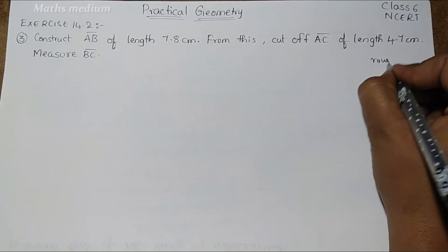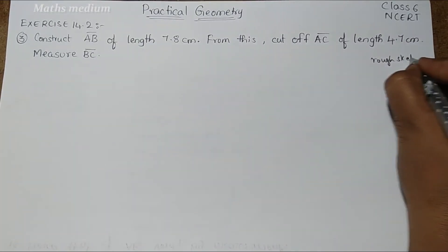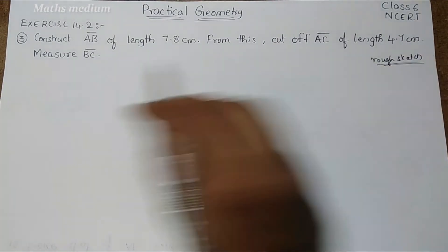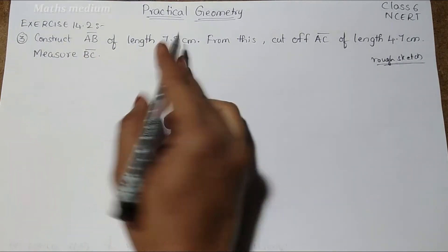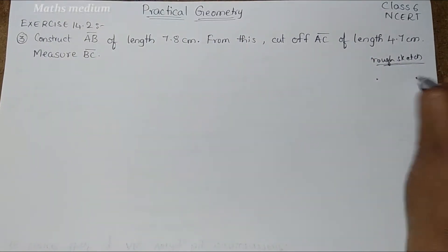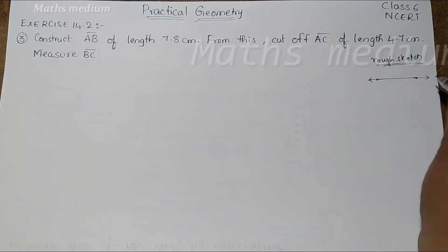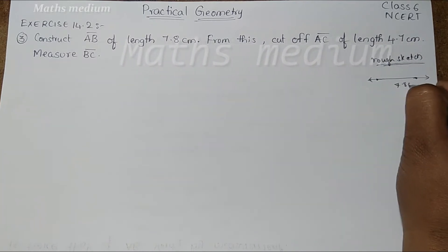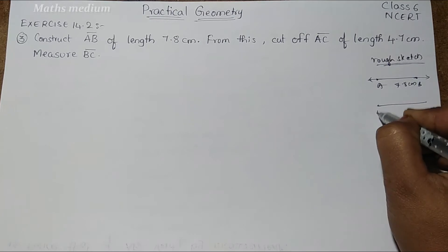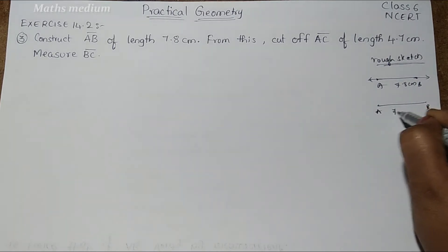Here take the rough sketch for the understanding purpose. We have to construct AB bar of length 7.8 cm. This is A and this is B, 7.8 cm.